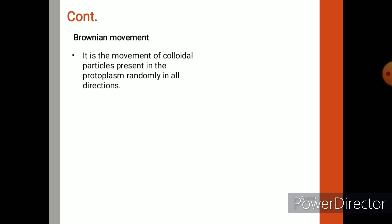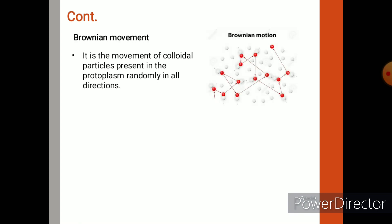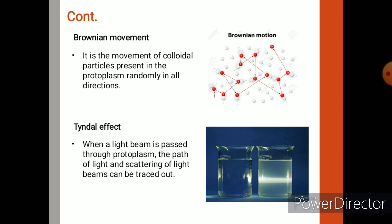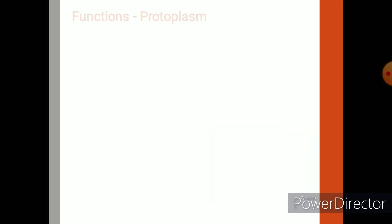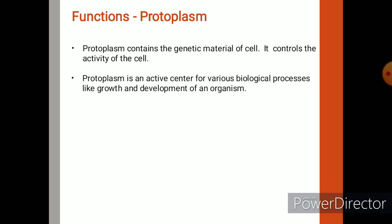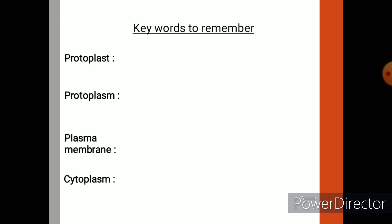Brownian movement means the particles present in protoplasm move randomly in all directions. Whereas Tyndall effect means if we pass a light beam through protoplasm, the path of light can be seen clearly. Regarding the functions of protoplasm, it contains genetic material. It controls the activity of the cell. Protoplasm is an active center and it helps in the growth and development of an organism.